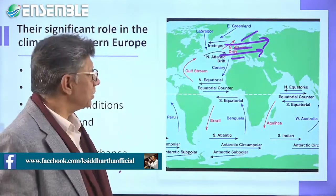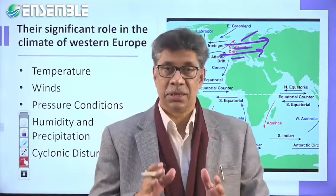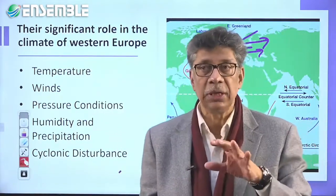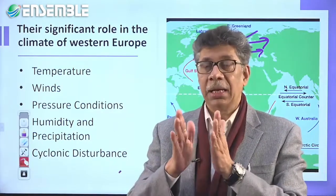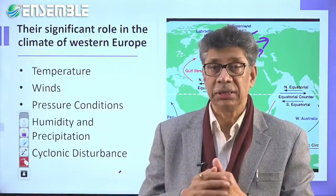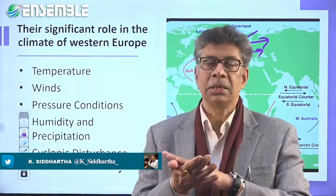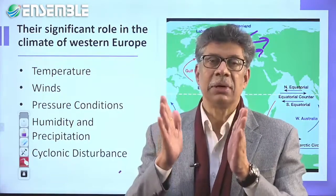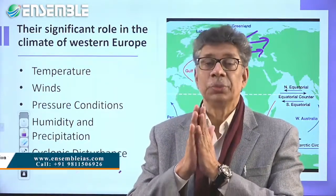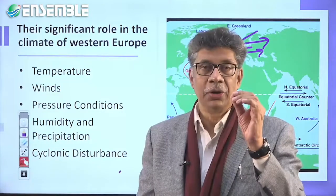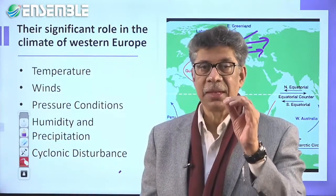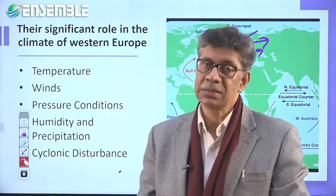The fifth effect is cyclonic disturbance. The whole region is affected by temporary cyclones, fronts, and depressions. The warm water body drives high evaporation, high moisture content, and consequently high precipitation. In summary, the climate of Western Europe can be explained through five points: temperature, winds, pressure conditions, humidity and precipitation, and cyclonic disturbance.